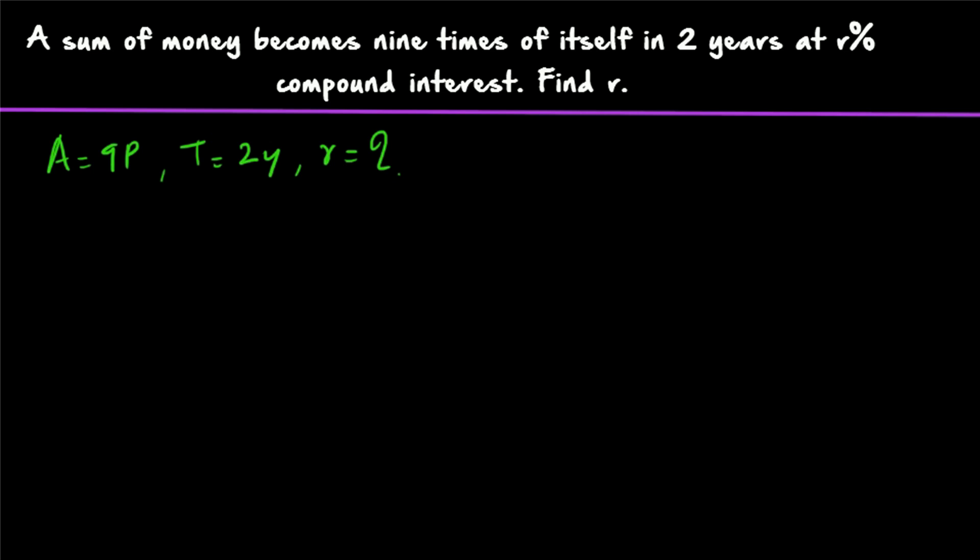Another type of question we already saw: when a sum of money doubles itself in 2 years, find how many years it takes to become 8 times, or if a sum becomes 3 times in N years, find when it becomes 9 times — we saw the shortcut formula for that. But here the question is different. Here, a sum of money is becoming M times of itself in T years and we have to find out the rate of interest, which is specifically asked.